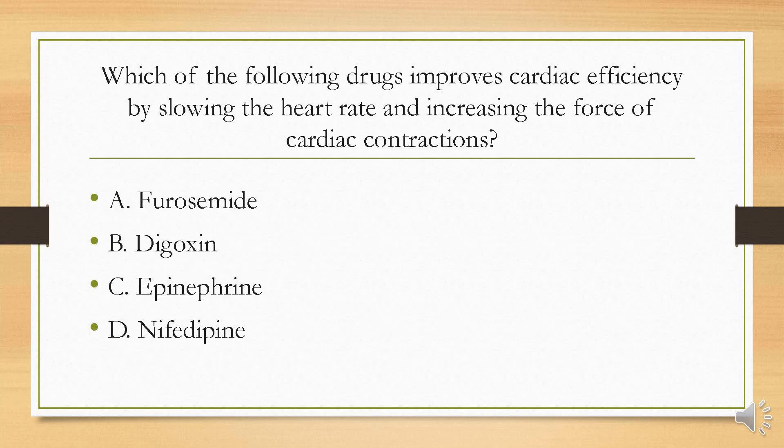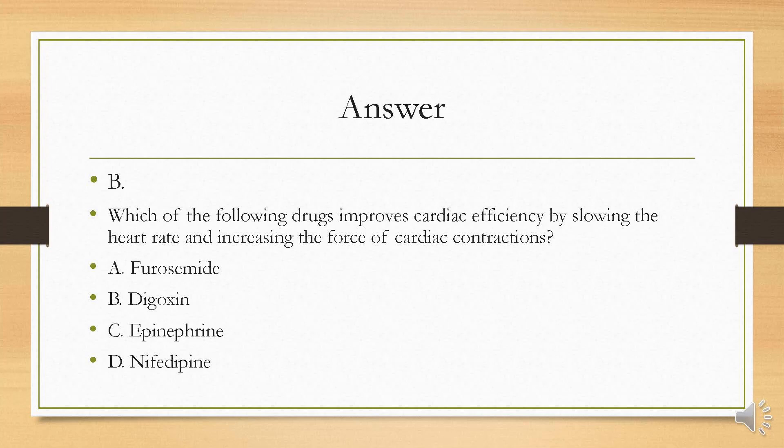Which of the following drugs improves cardiac efficiency by slowing the heart rate and increasing the force of cardiac contractions? Is it furosemide, digoxin, epinephrine, or nifedipine? Your answer is B, digoxin. Digoxin is an inotrope that works by altering the mineral content of heart cells — for example, changing the amount of sodium or potassium in the cells — which makes it easier for the heart to pump blood and reduces the strain the heart muscle endures.